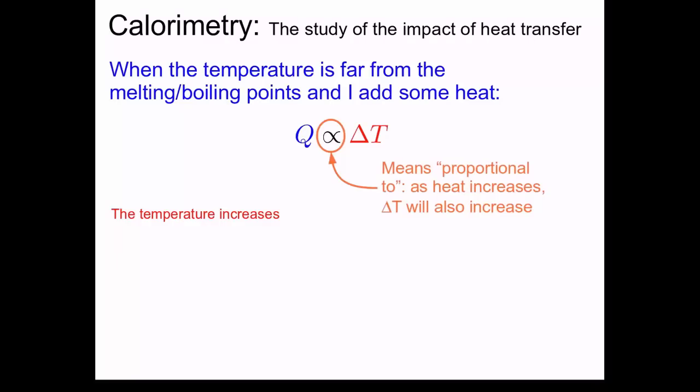If the change in temperature were to decrease, then Q would also drop. Q would be negative in that case. Positive Q means I'm adding heat and the temperature is going up. Negative Q means I'm removing heat and the temperature is going down.